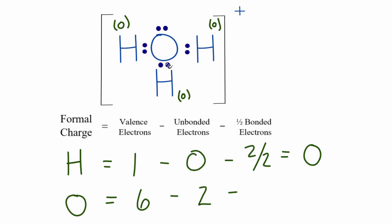we have two, four, six, divided by two. So that's six minus two, that's four, and then four minus three is plus one. So the formal charge on the oxygen is plus one.